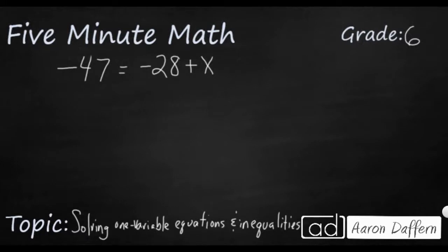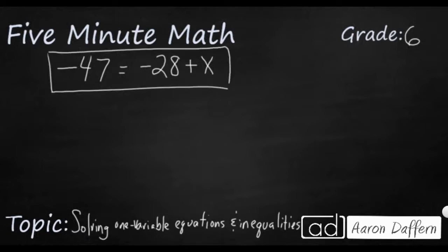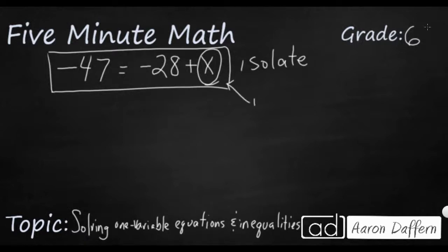We have a very simple equation up here on the left: negative 47 equals negative 28 plus x. What we're trying to do is isolate the variable. You might have heard that phrase before. Our variable is our unknown — in this case, it's the x. That's the number we do not know the value for. We need to isolate it, or get it by itself.